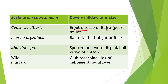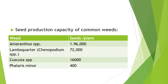Next topic is seed production capacity of common weeds. Compared to cereal crops or field crops, weed seeds are more viable and have longer viability periods, along with higher seed production. First is Amaranthus species, which produces 196,000 seeds per plant. Second is lamb's quarter, also known as Chenopodium album, which produces 72,000 seeds per plant. Third is Cuscuta species, which produces 16,000 seeds per plant. Next is Phalaris minor, which produces 400 seeds per plant.